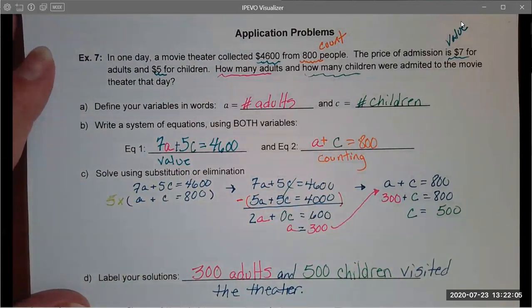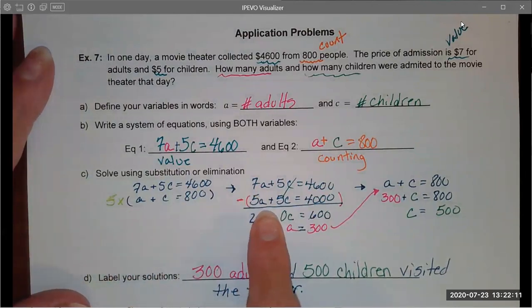I did so by multiplying my bottom equation by 5 to come up with a system that looks like this. I used subtraction because I wanted to eliminate the number of children in the problem.